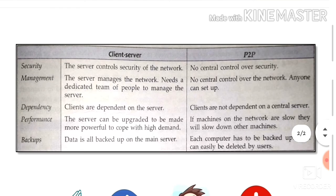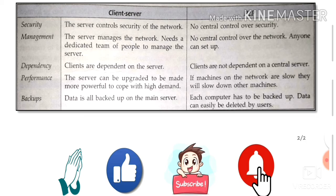Now let's look at some key comparison points between client-server and peer-to-peer networks. The first point is security. In a client-server network, the server controls the security of the network, managing it so that no unauthorized person or system can connect. This keeps the data safe and secure. In a peer-to-peer network, there is no central control over security, so the data is not as safe and secure.